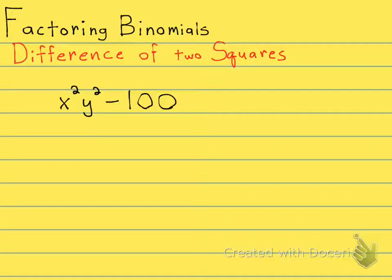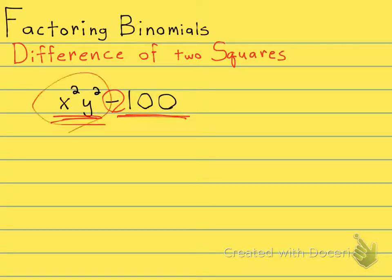This is the difference of two squares. Difference means subtraction. These are both squares. This one here is xy times xy, and this one here is 10 times 10.